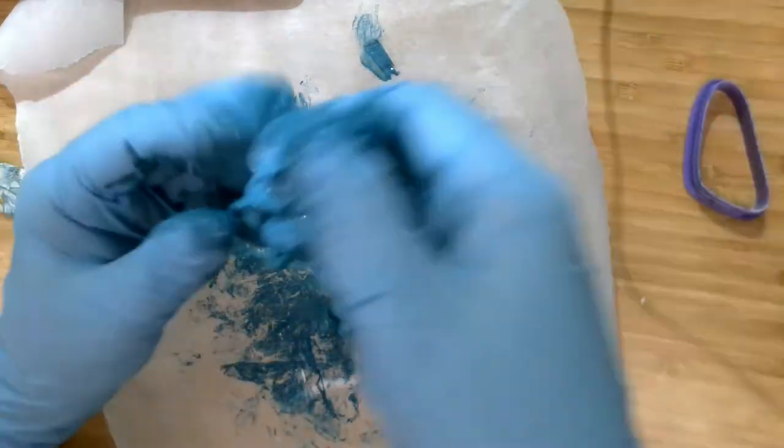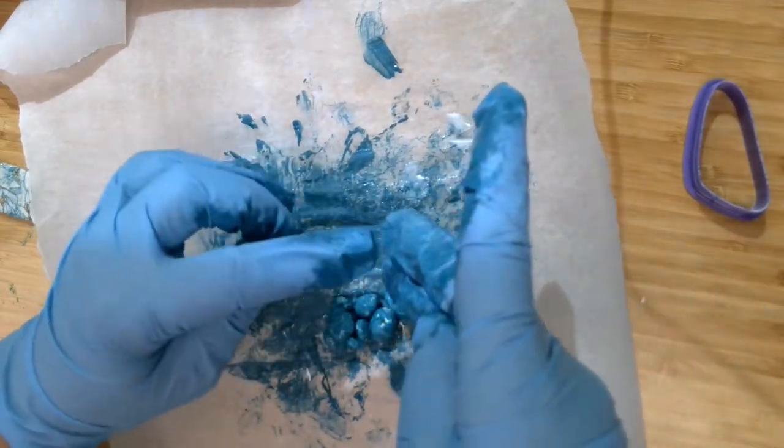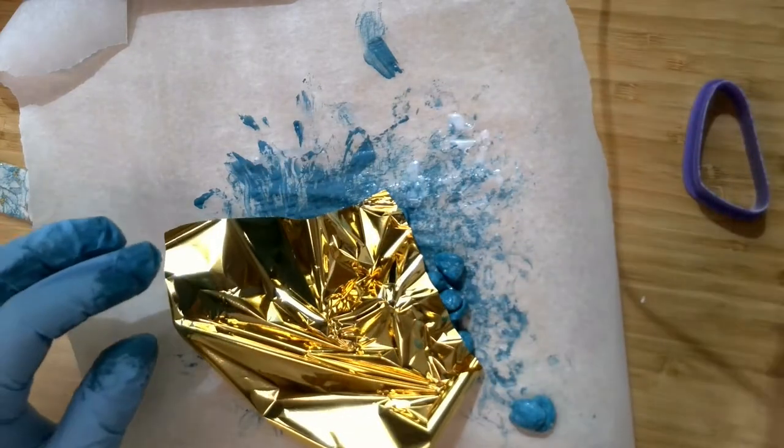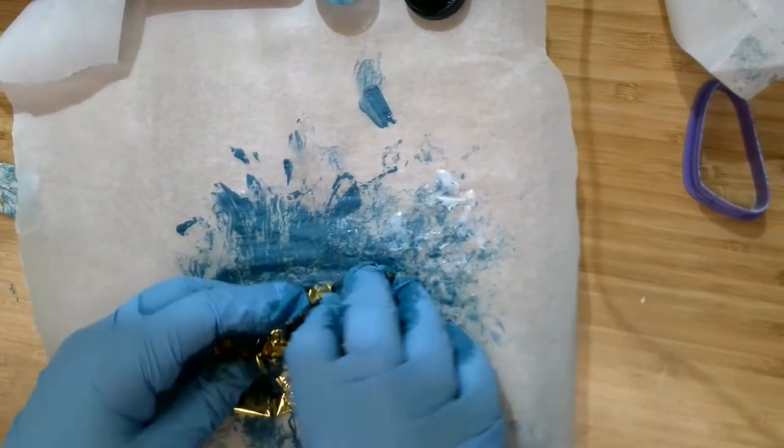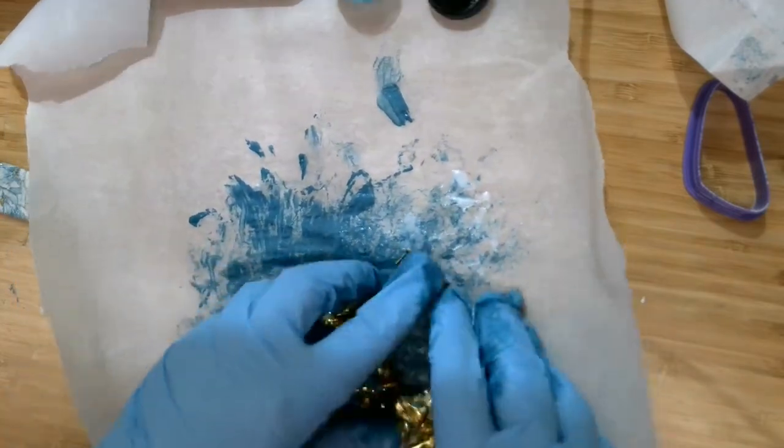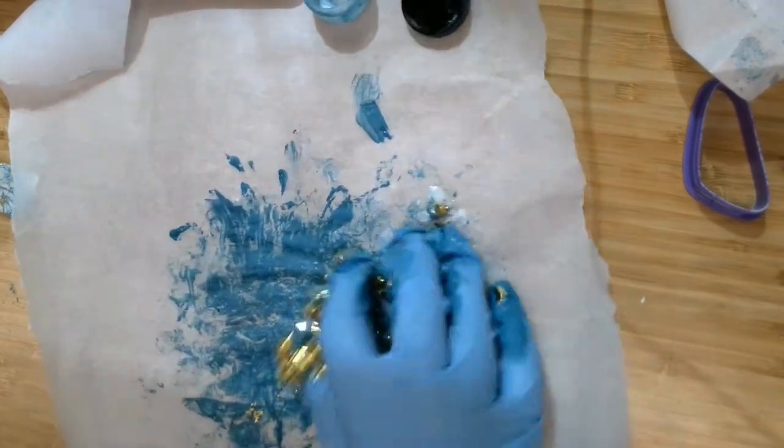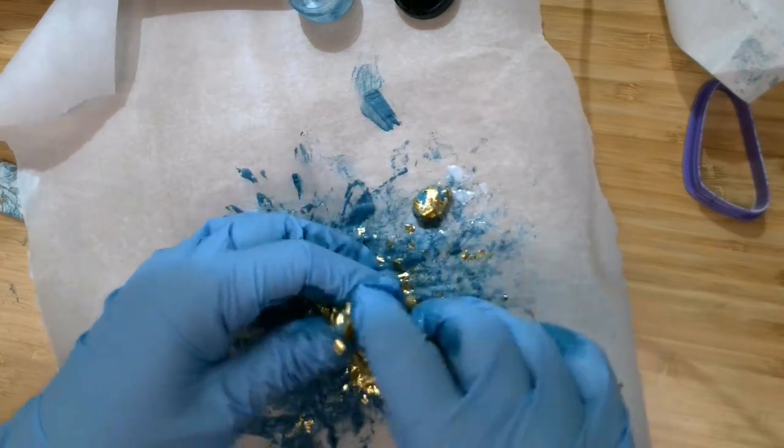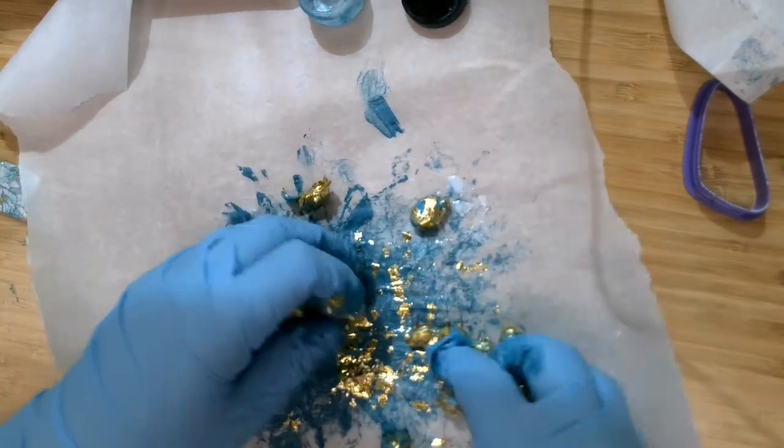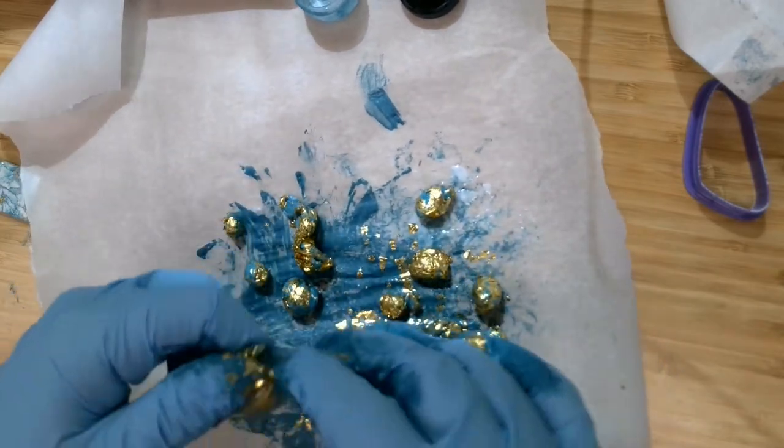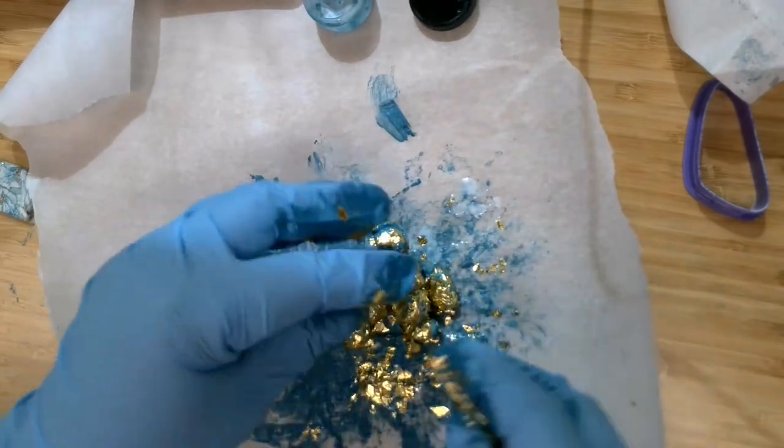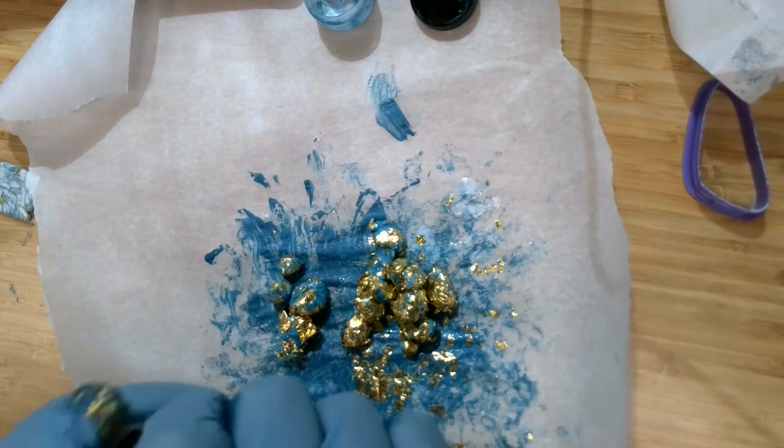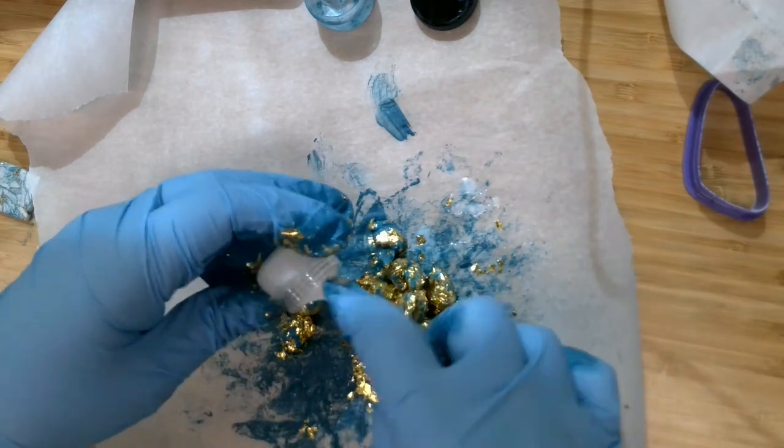And now we're going to get some of our gold leaf. My goodness, it's really sticky. And roll it around. And again, try to get the gold on all the pieces if you can. And once you've got the gold leaf in there, you may need a little bit more of the liquid Sculpey. Because we do want this to all stick together.